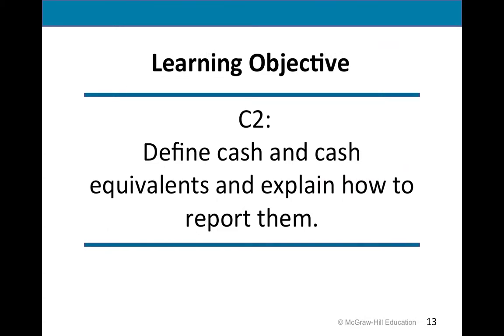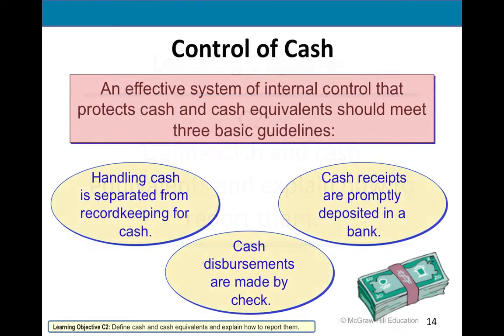The thing most stolen — the most vulnerable asset — is cash and cash equivalents. Cash includes not just your paper bills and coins, but everything: how much you have in your bank accounts — savings accounts, checking accounts, money market accounts.